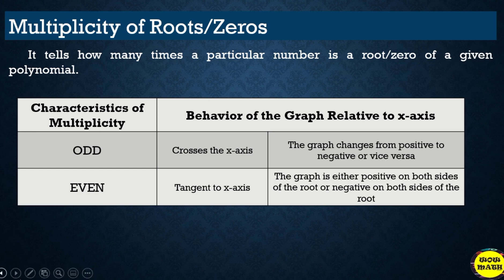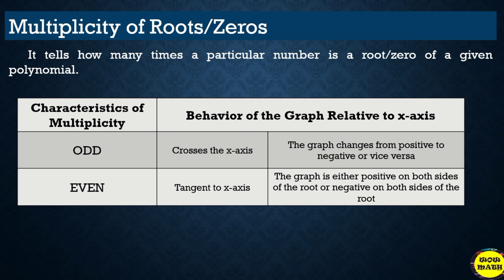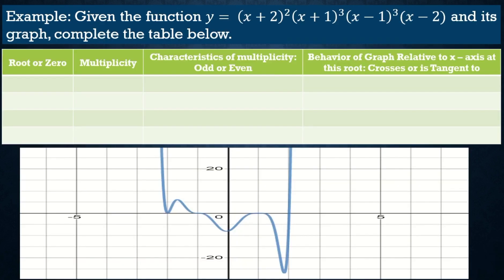The characteristics of multiplicity: when the multiplicity is an odd number, the graph crosses the x-axis — meaning the graph changes from positive to negative or vice versa. When the multiplicity is an even number, the graph is tangent to the x-axis, meaning it does not cross; it stays at the x-axis. The graph is either positive on both sides of the root or negative on both sides of the root.